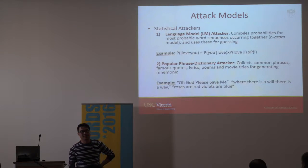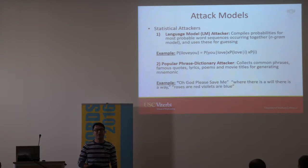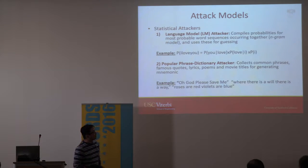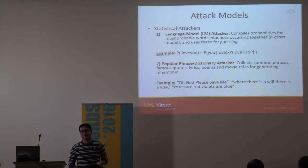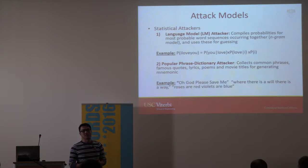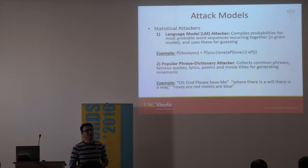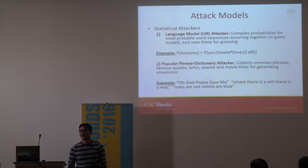Another possible attack: prior research shows people come up with passphrases from famous quotes, poems, lyrics, and movies. For example, 'Oh God please save me,' or 'where there is a will there is a way,' or 'roses are red, violets are blue.' These are actual passphrases we got from our user study. Once an attacker crawls famous quotes and poems, they can use that as a baseline to attack — substituting words just like John the Ripper with rule-based attacks.